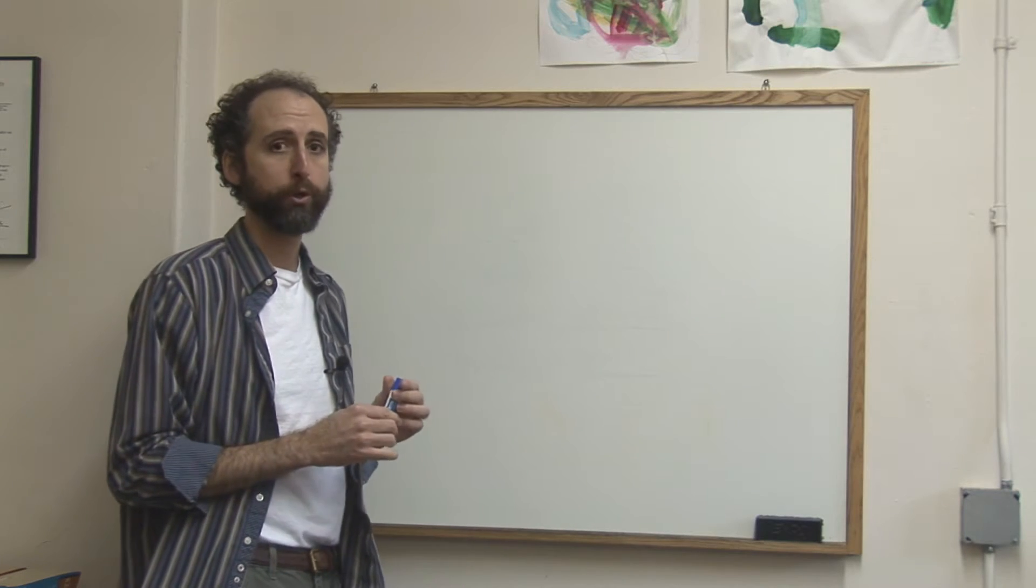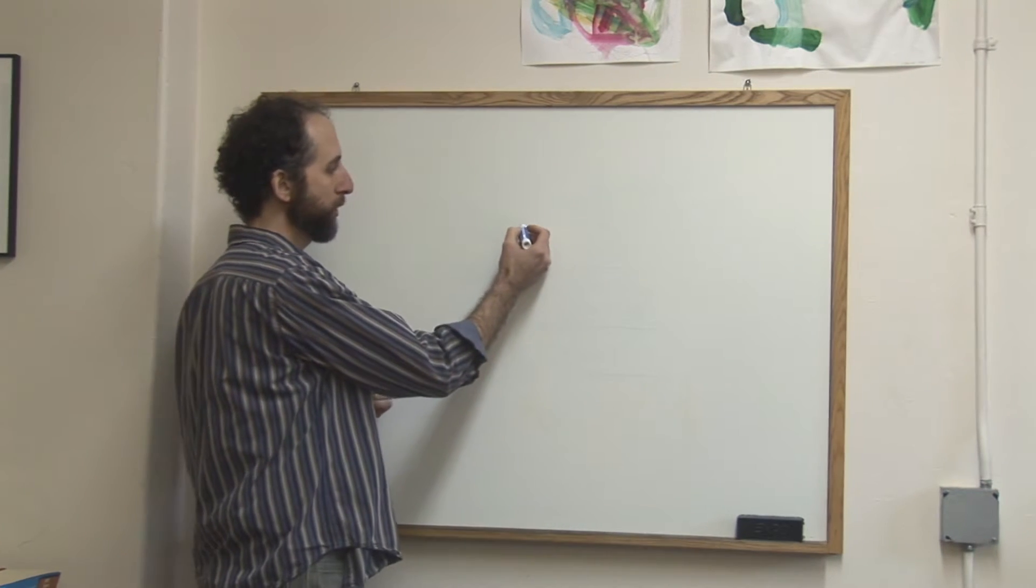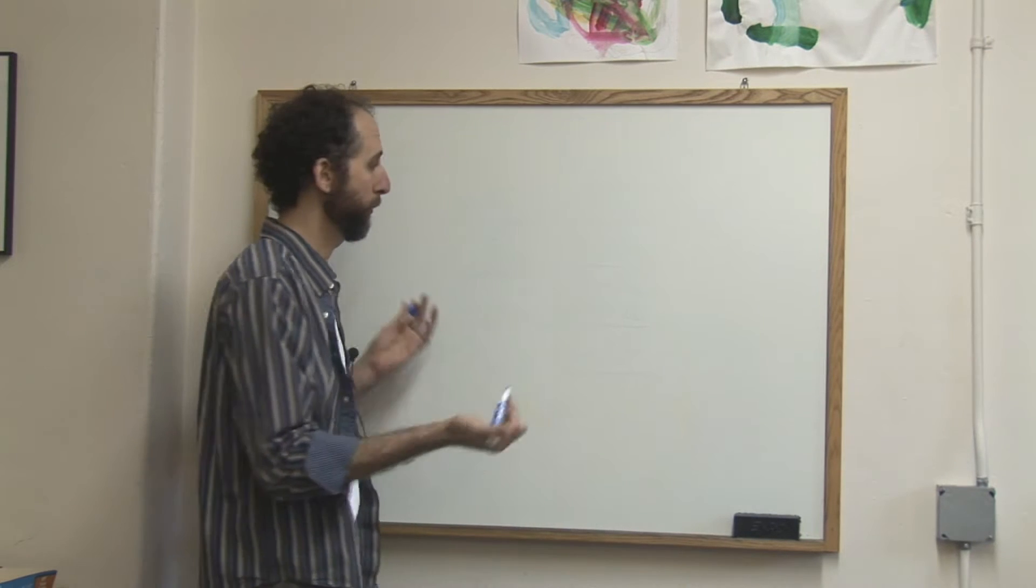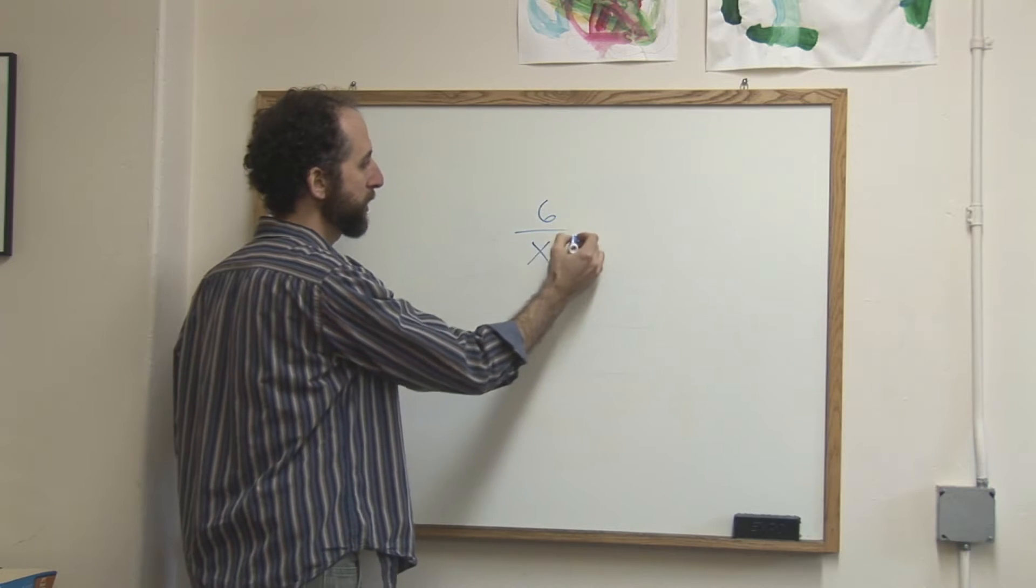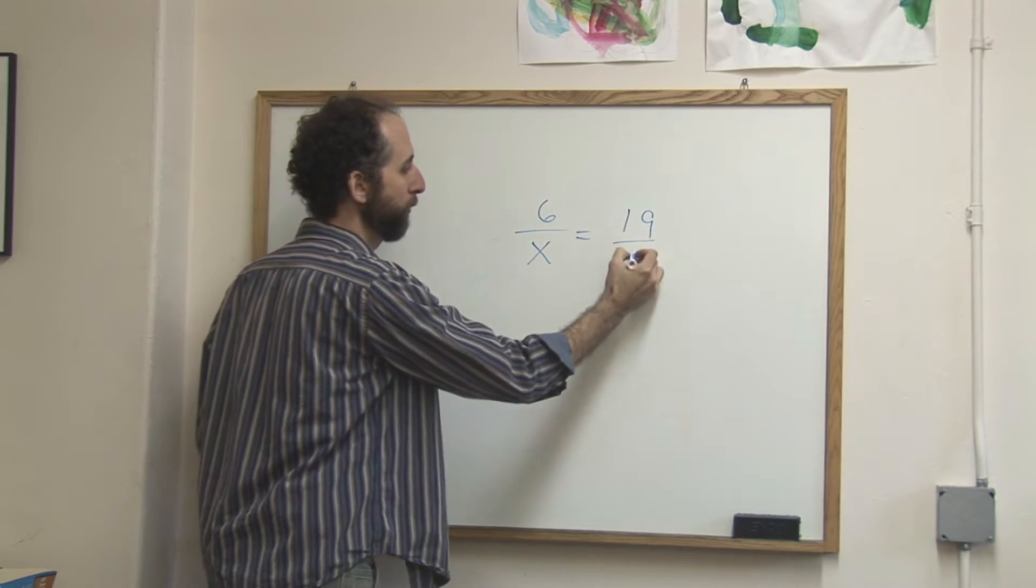Let's take a look at cross multiplying proportions. If you've got a proportion that you've set up, either from a word problem or just from a straight algebraic question, such as 6 over x equals 19 over 5,